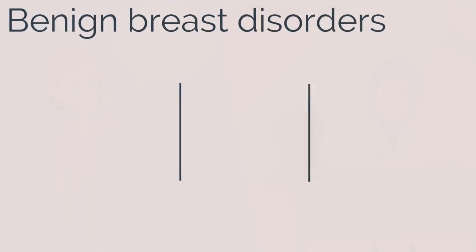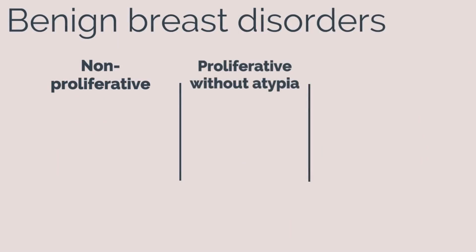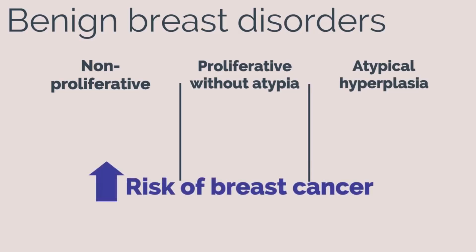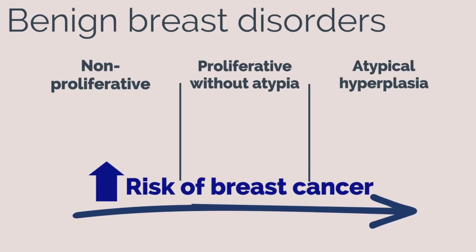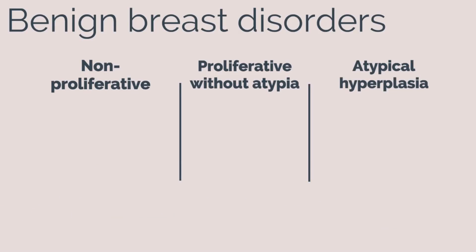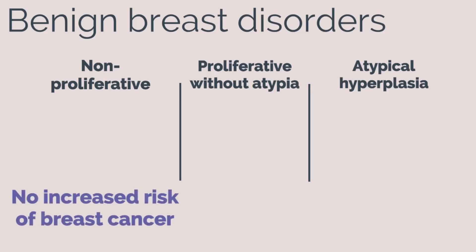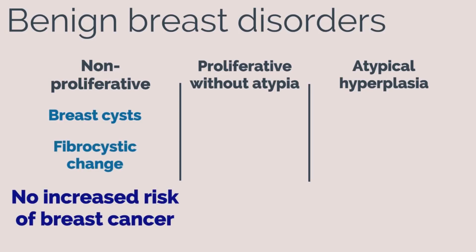Let's start by reviewing benign breast disorders. They are classified histologically into three categories: non-proliferative, proliferative without atypia, and atypical hyperplasia. The risk of developing breast cancer increases as we move toward atypical hyperplasia. Non-proliferative disorders are generally not associated with increased risk of breast cancer and include breast cysts and fibrocystic change.